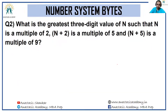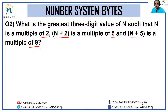Next: what is the greatest three-digit value of n such that n is a multiple of 2, n + 2 is a multiple of 5, and n + 5 is a multiple of 9? Such questions are best solved if we have options available; unfortunately this is a free-response question so we'll have to use a skill called combining.